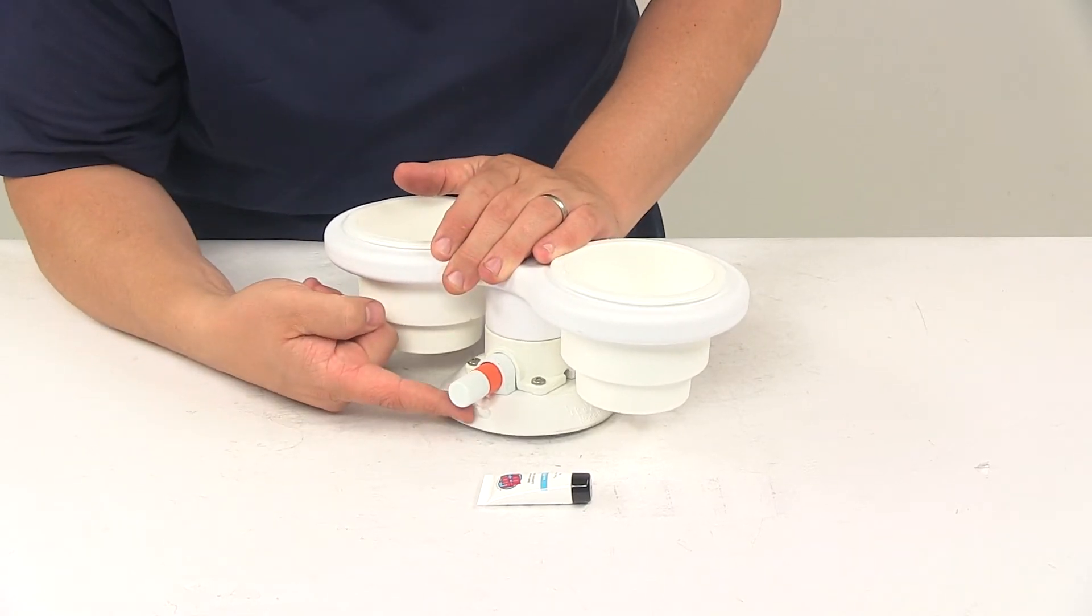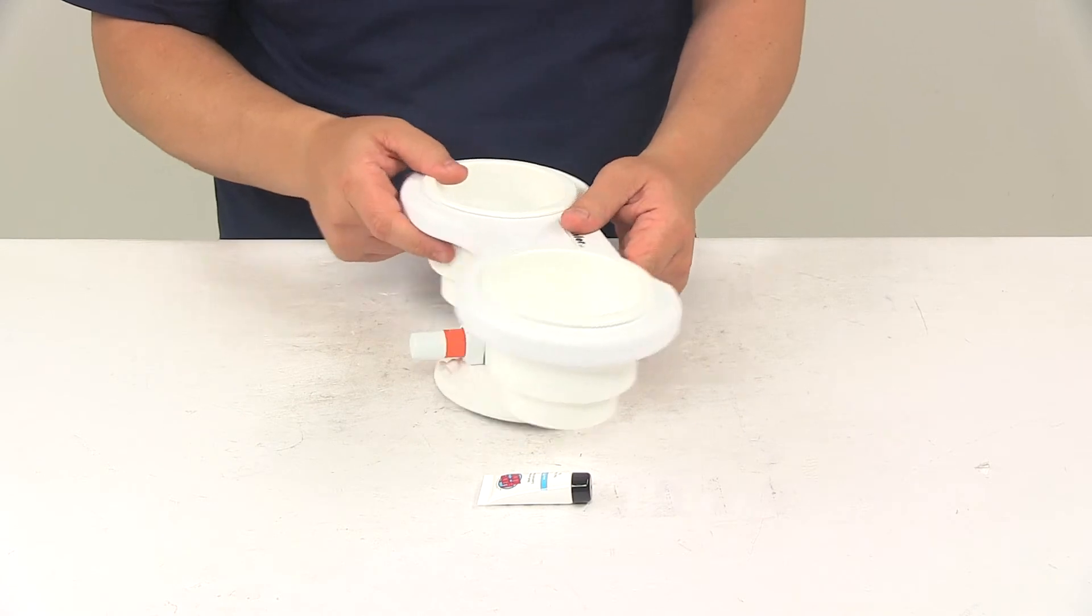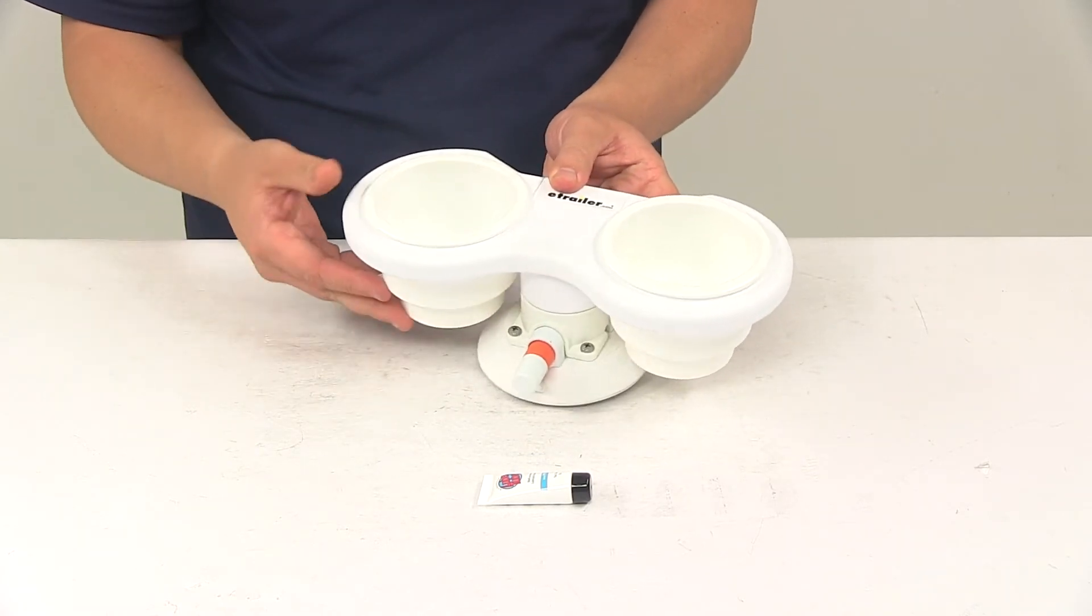When you're ready to release it, you just need to lift up on these grip tabs, one at the front, one at the back. That's going to break the seal and allow the unit to be removed from the surface.